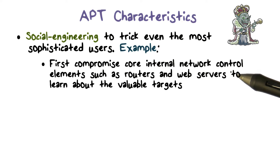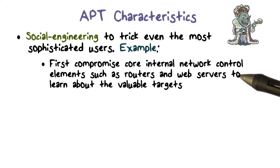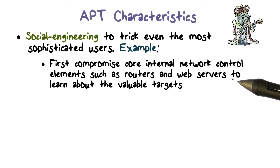For example, an APT can be designed to first compromise an internal network router or server, and all it does at that point is learn about the valuable individuals — specifically, who's emailing to whom, on what topic, and with what kind of attachments. With such knowledge, the APT can then forge email from one person to another, and this email can appear to be very legitimate.